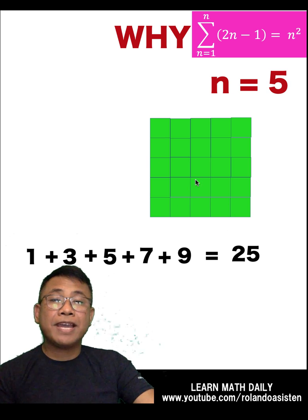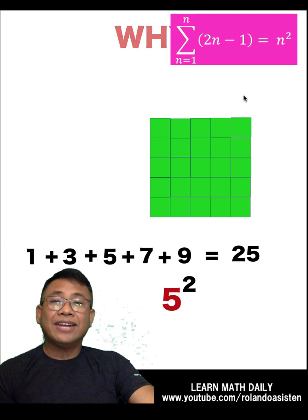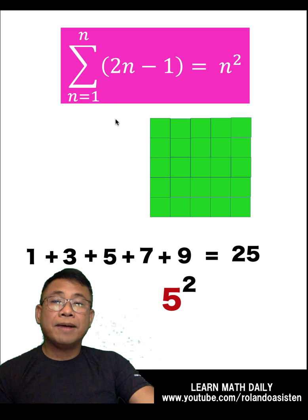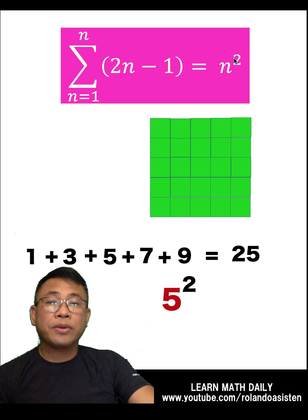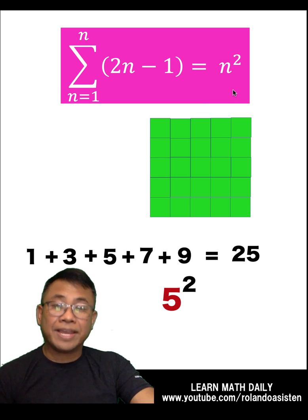And since this is a 5 by 5 square, then another way of counting all these squares is just to multiply 5 by itself, or square 5. And that is now the reason why the sum of the first n odd numbers is computed by just squaring n, where n represents the number of odd numbers that we are summing up.